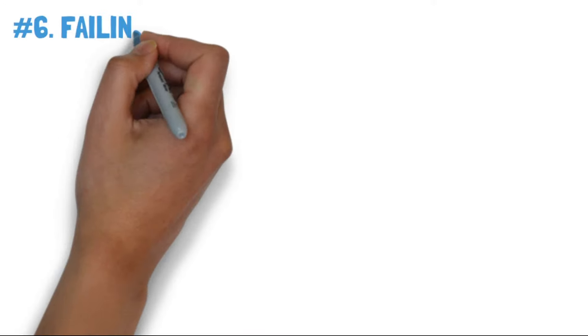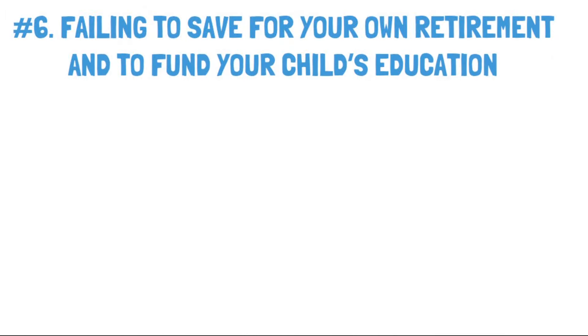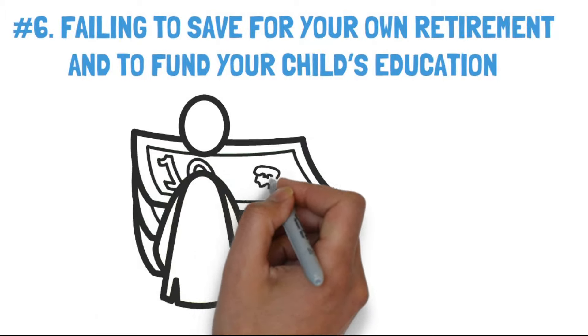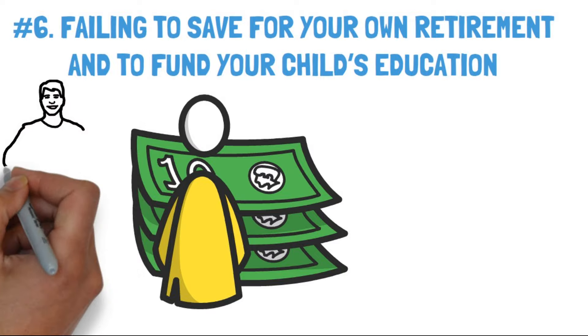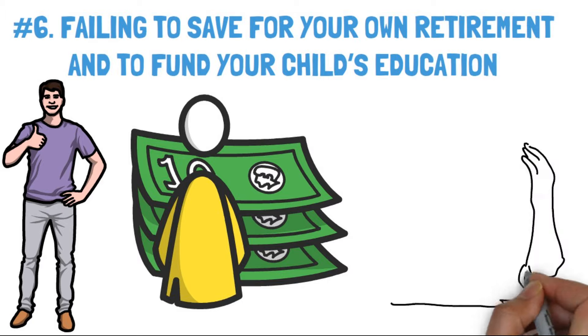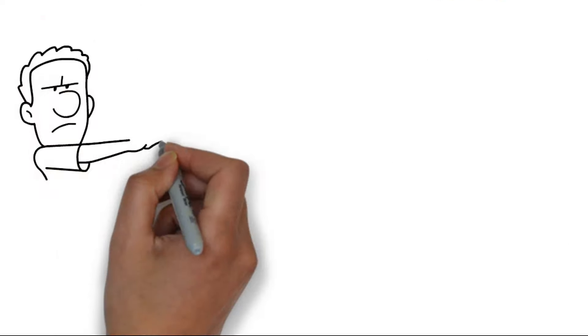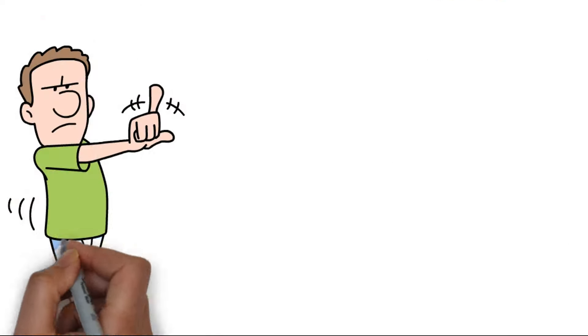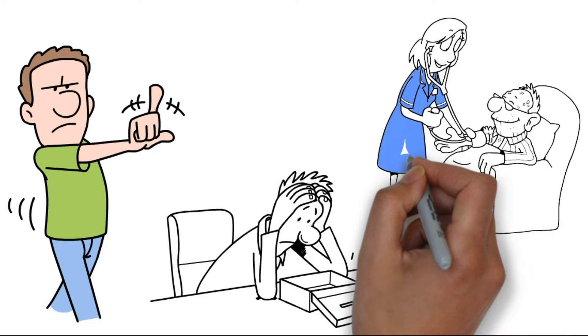Number 6. Failing to save for your own retirement and to fund your child's education. If you have sufficient funds to cover your children's university expenses and ensure a comfortable retirement, then go ahead and make the decision. Unfortunately, not everyone has the means to afford this. Certainly, it's important to assist others, but it's not wise to jeopardize your own future in the process. Not prioritizing retirement savings can lead to future financial challenges and potentially relying on your working child for support. Prioritize your retirement above all else.